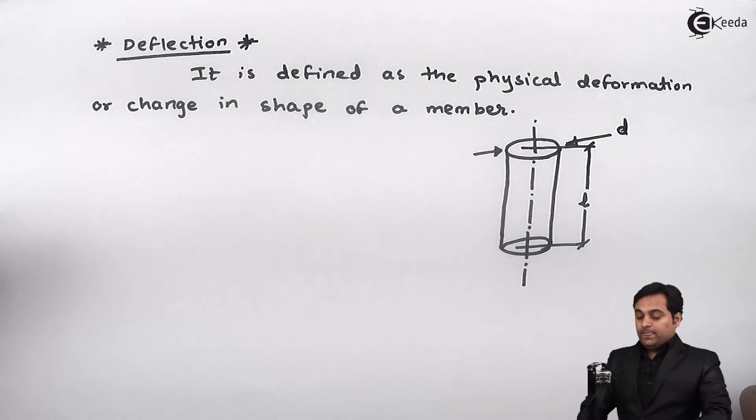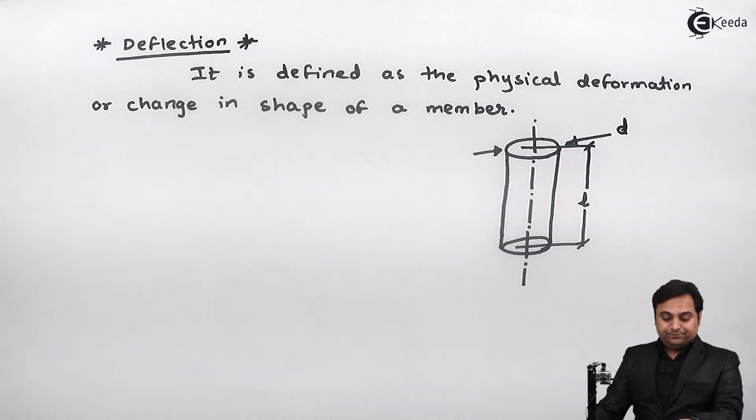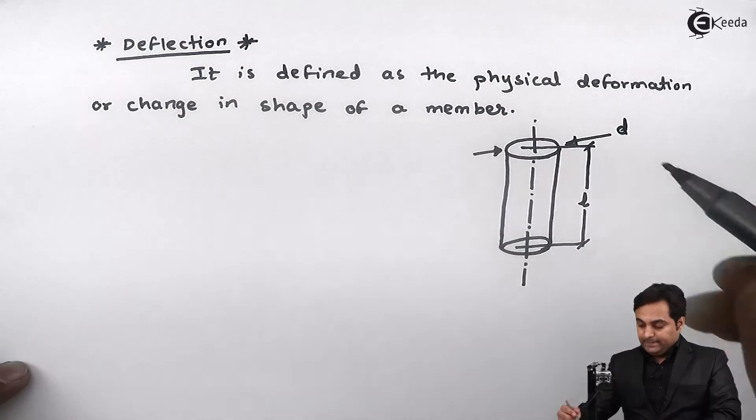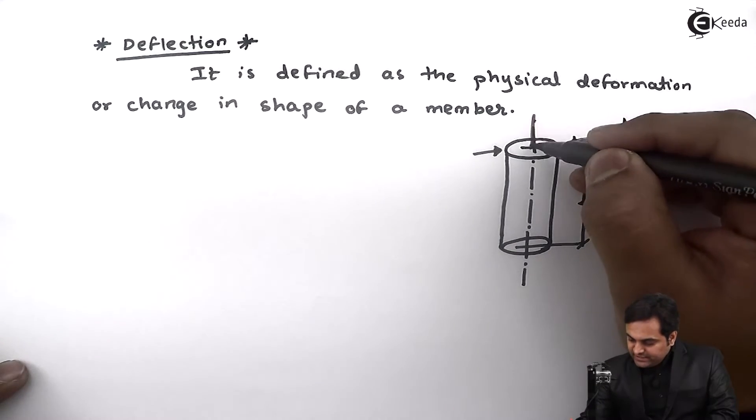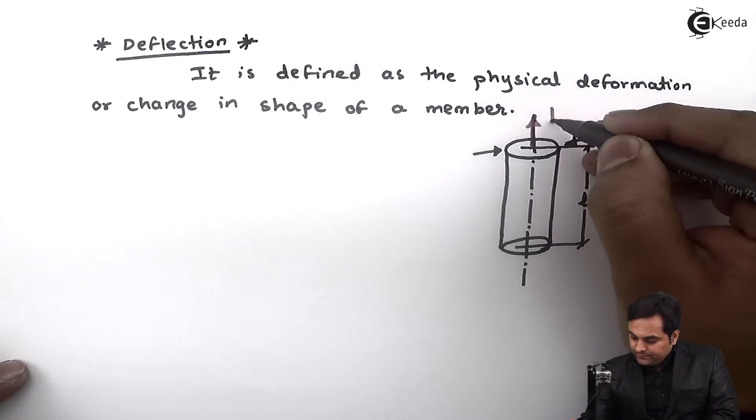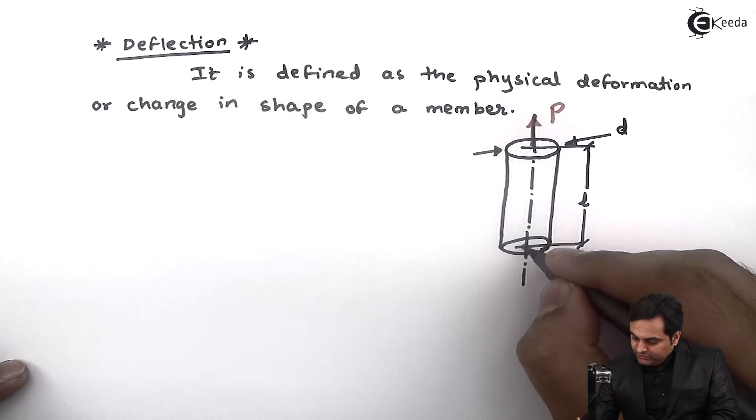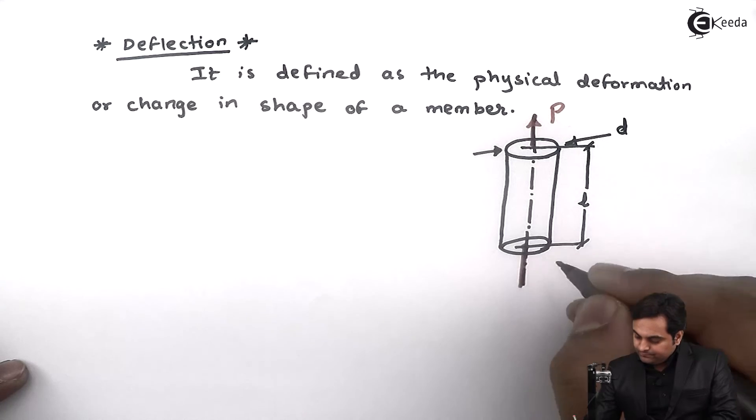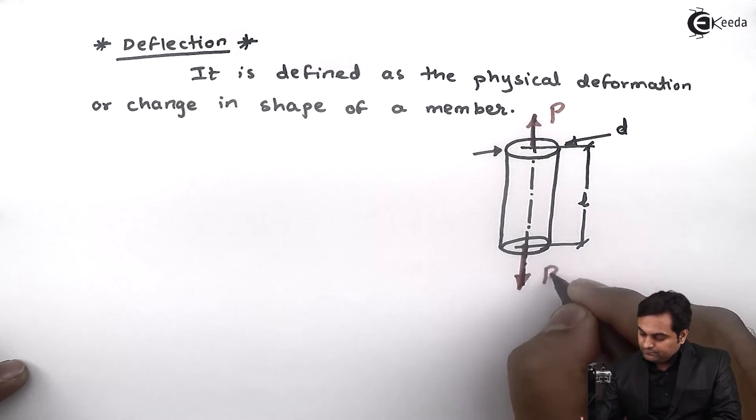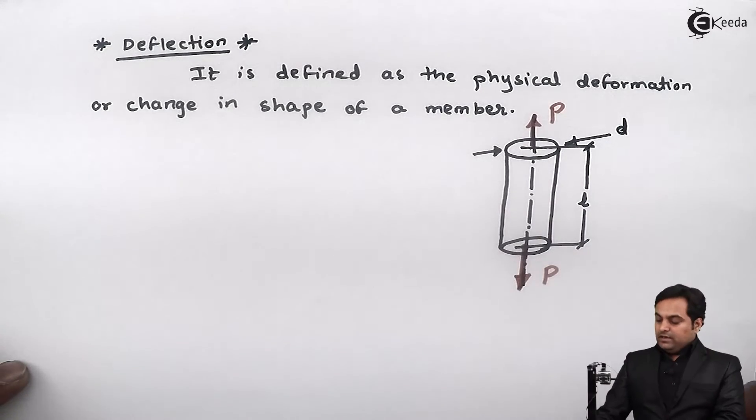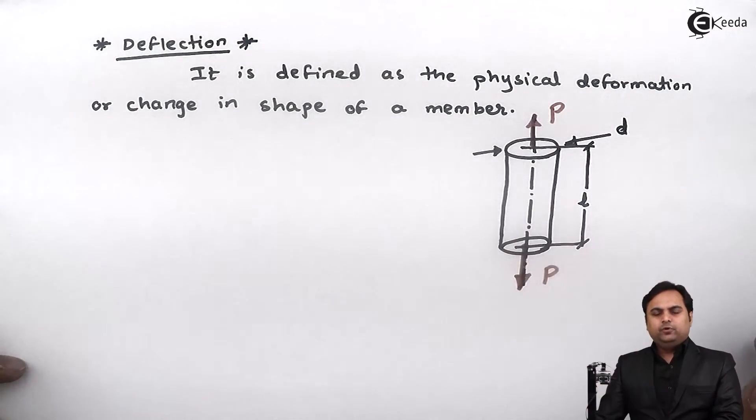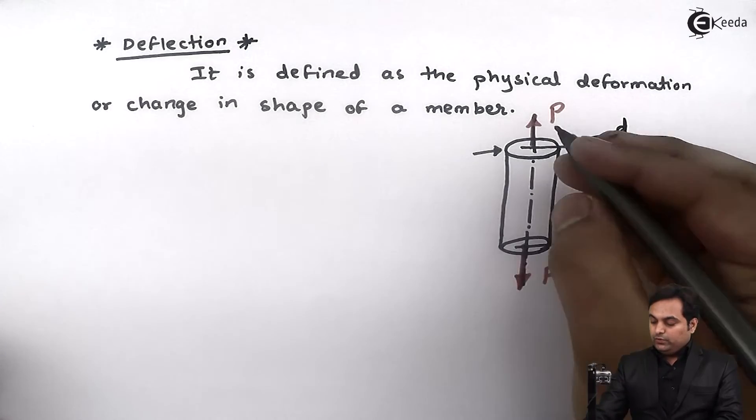Now on this rod I will assume that the load which is acting is tensile, that is a pull type of load. Under the action of this pull type of load, the diameter will go on decreasing and length will go on increasing.